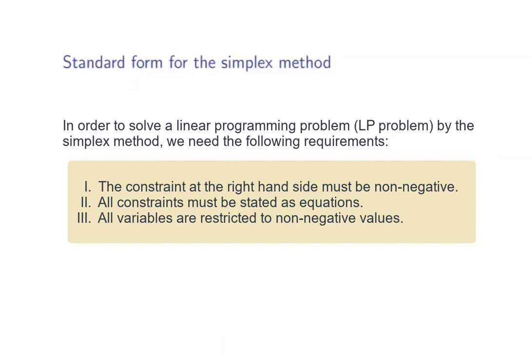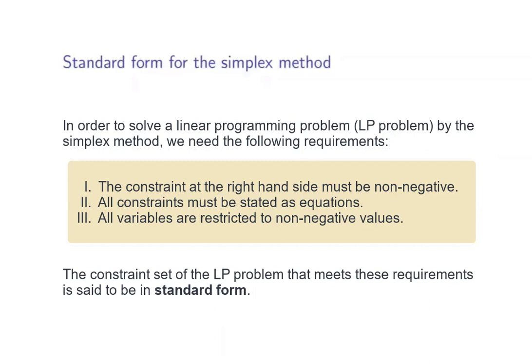First, we need to make sure that the right-hand side of each of the constraints cannot be a negative value. Next, we want to make sure that all the constraints must be stated as equations. Third, all the variables are restricted to non-negative values. And in case our problem has not yet been written into the standard form, we should reformulate our linear programming problem so that these requirements are achieved. As long as these three requirements are fulfilled, we state that the constraint set is in standard form.